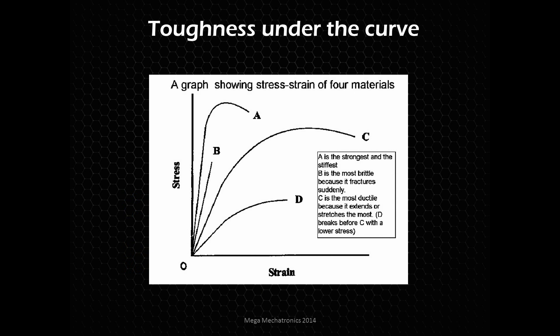Let's take another example with some stress-strain curves. Starting from the lowest toughness based on the chart area: B has the least amount of area. D, even though it is more ductile, is not as tough as A, where the strength really makes up for it. And then C is, of course, very tough — a very ductile material.